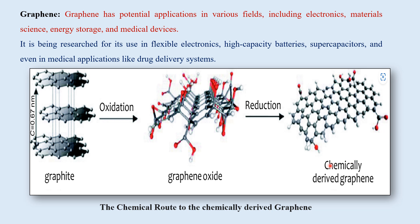This is the chemical route to chemically derived graphene from graphite, using the oxidation method by which you get graphene oxide, then the reduction method, giving the final product which will be chemically derived graphene.